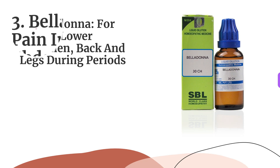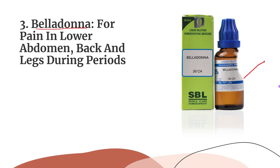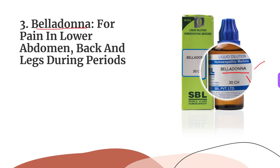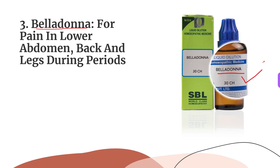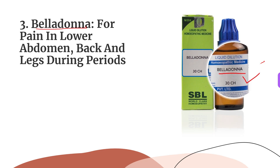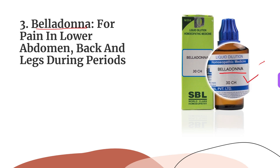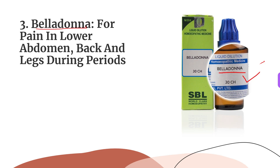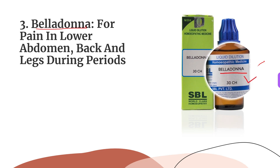The third medicine is Belladonna, for pain in the lower abdomen, back, and legs during periods. It is very suitable for pain in the lower abdomen, lower back, and legs during menses. Cramps occur in the uterus along with an intense bearing-down sensation. Bearing-down pain worsens on lying down. Bleeding during periods is bright red, profuse, and hot; headache and a heated sensation in the head usually accompany the bleeding. This medicine can be taken once or twice a day in 30C potency.